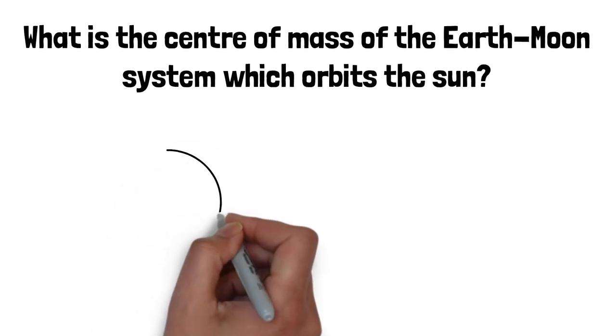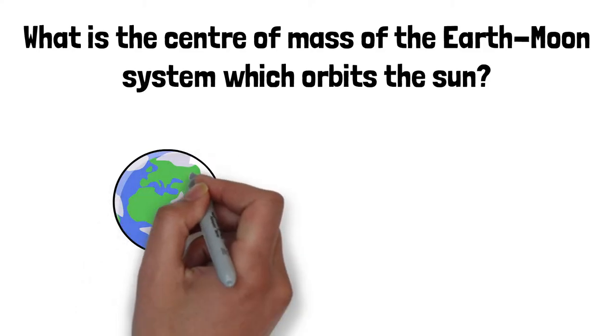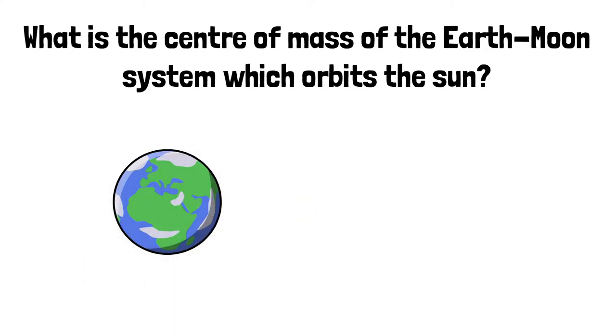This begs the question, what is the center of mass of the Earth and Moon together orbiting the Sun? In order to answer this, we need to gather some information about the Earth and the Moon.